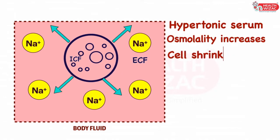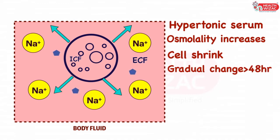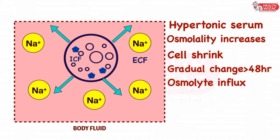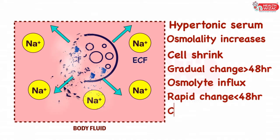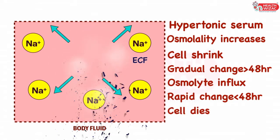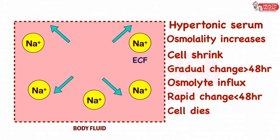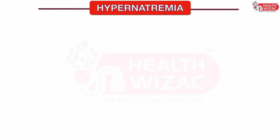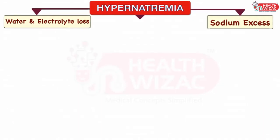If this change is happening gradually, that is over a period of more than 48 hours, then the cellular damage is avoided with the influx of osmolates into the cells. But if this change is happening too rapidly, then the cells do not get time to adapt and ultimately they shrink and die. Hypernatremia primarily occurs either due to water and electrolyte loss from the body or due to excess sodium coming inside the body.